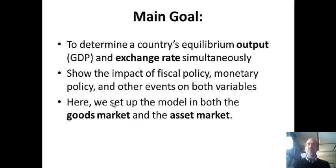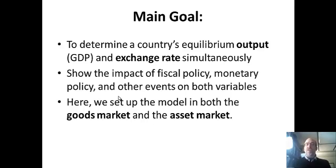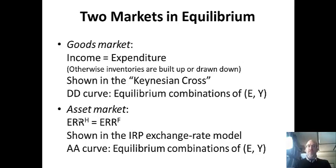It's pretty useful for a baseline economic policy analysis. We're going to set it up by talking about two markets: one is the goods market, and the other is the asset market. Both models have to be in equilibrium. Each curve represents an equilibrium in these markets, and simultaneous equilibrium will be the crossing point of both curves.